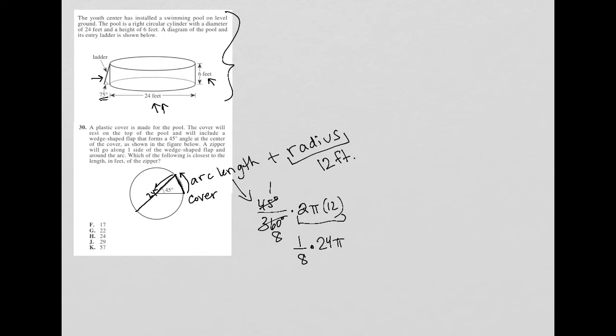I can simplify this further because 8 goes into 8 once, 8 goes into 24 three times. So this entire thing equals 3π.